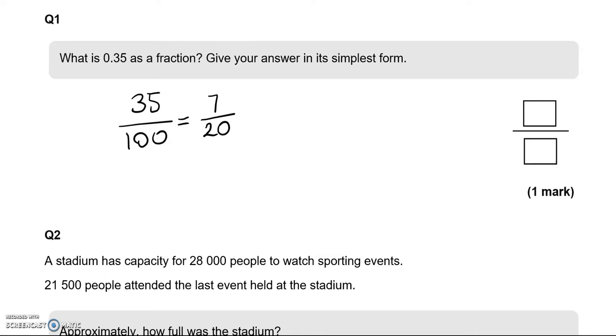Can we simplify any further? No. Because the only number I can divide 7 by is 7, but I can't divide 20 by 7. So 7 over 20.